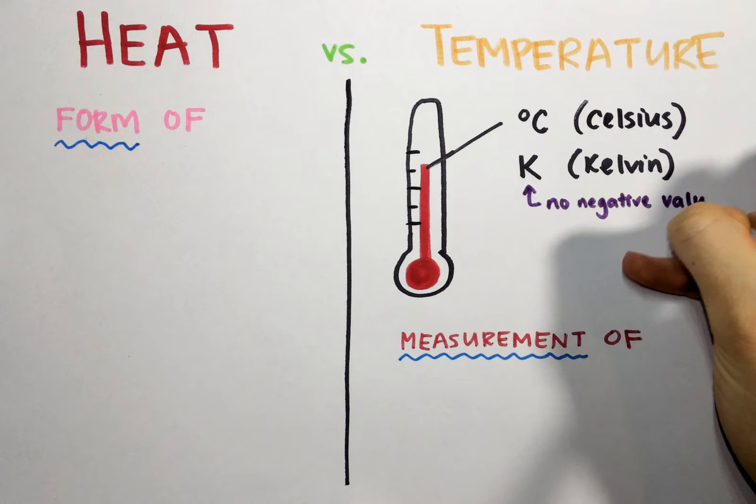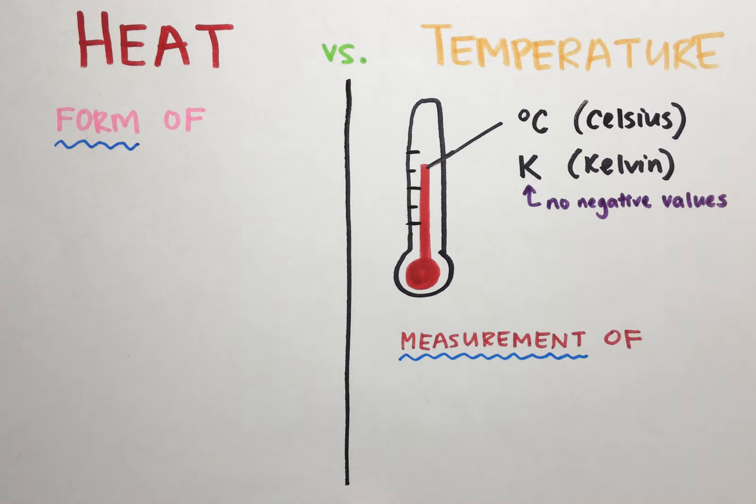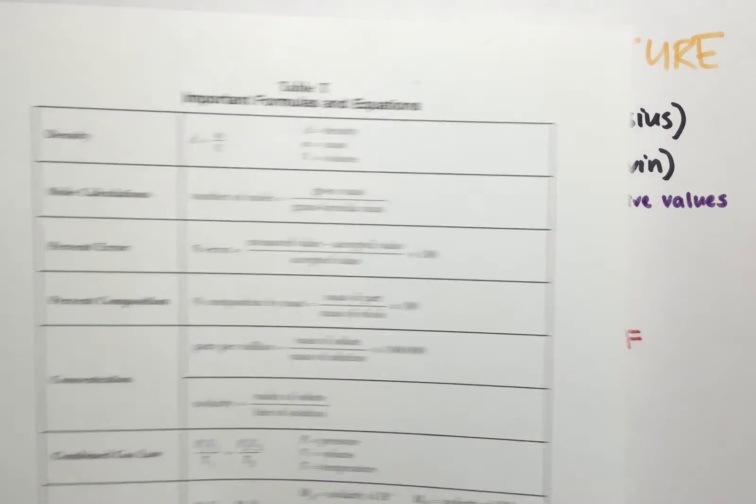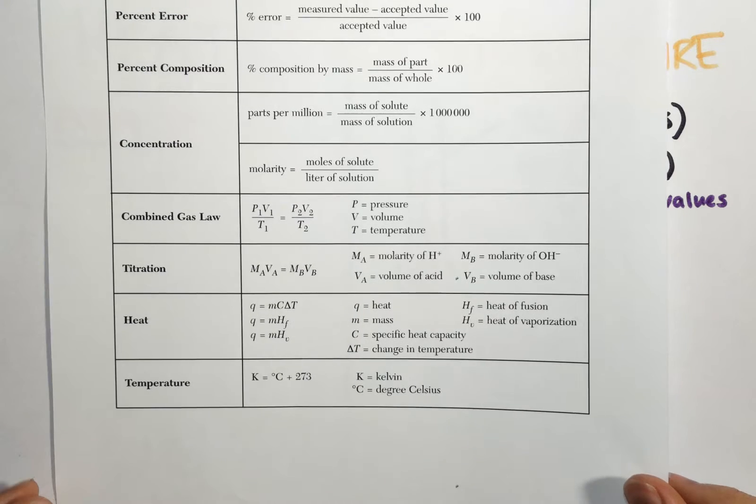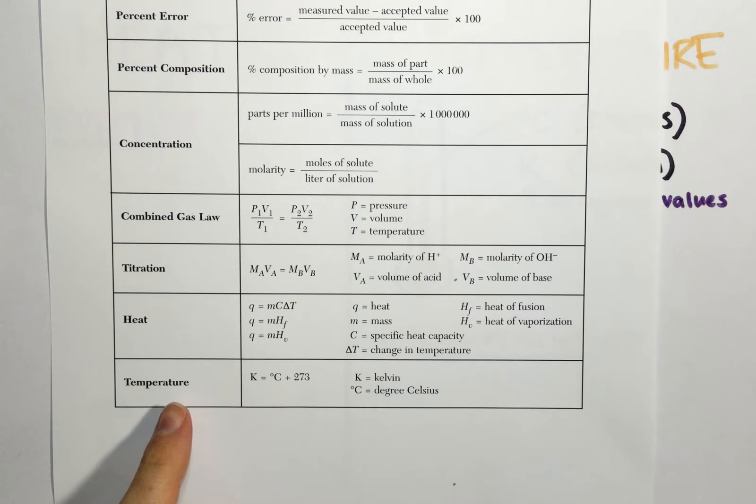That's extremely useful when we're going to be working with calculations later on down the line. But it's going to be very important to know how to convert between these two different temperature scales. And luckily, on reference table T, if you slide down all the way to the bottom, you're going to see an equation listed under temperature.